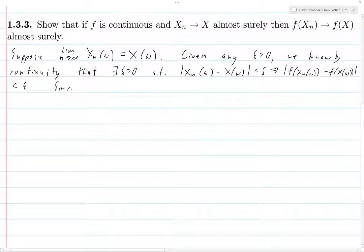Now, since we know that the limit as n goes to... and by the way, this condition holds for every single natural number n. So since this limit of x_n of omega is x of omega, because we've assumed that,